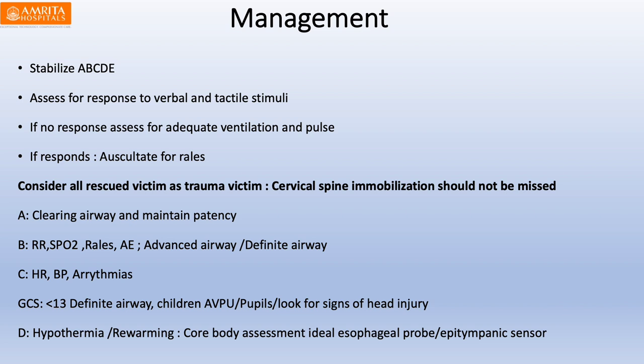In breathing, assess respiratory rate, saturation, pulmonary rales, and consider advanced or definitive airway. Continue positive bag-mask ventilation if already started. In circulation, assess heart rate, BP, and look for arrhythmias — especially in hypothermia. GCS less than 13 is an indication for definitive airway. In all patients, look for pupillary asymmetry and head injury. Prevention of hypothermia and early rewarming is key; core body temperature should ideally be measured by esophageal probe or epitympanic sensor.